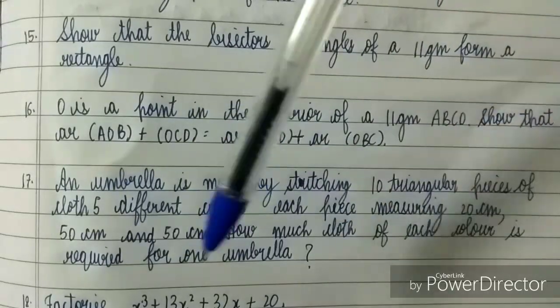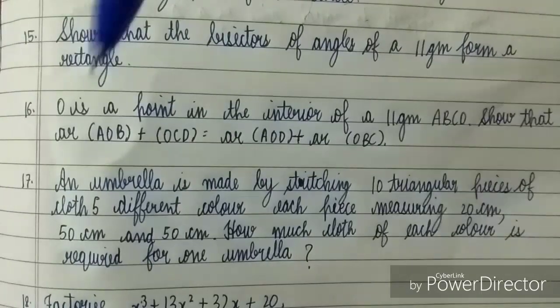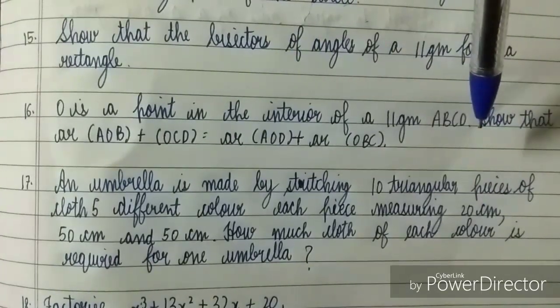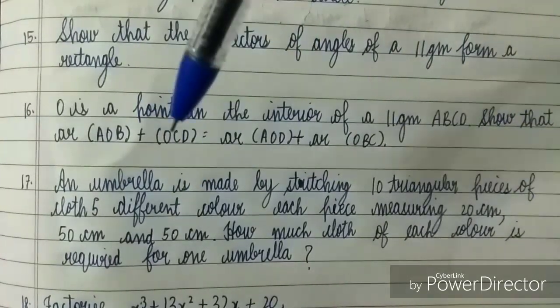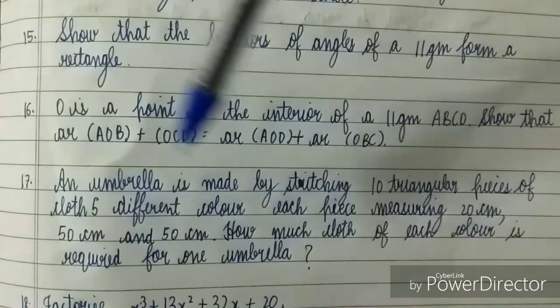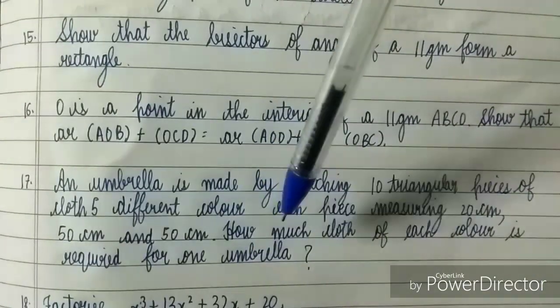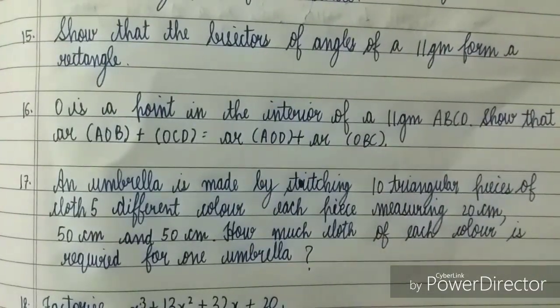From Heron's formula, you don't have to leave this question. This question definitely comes in the exam in one way or the other. An umbrella is made by stitching 10 triangular pieces of cloth of five different colors, each piece measuring 20 cm, 50 cm, and 50 cm. How much cloth of each color is required for one umbrella? Very important question - don't leave this.